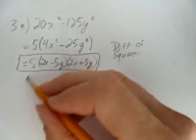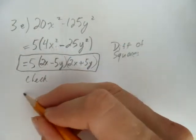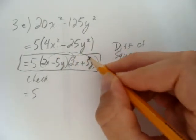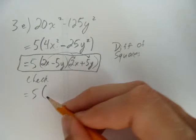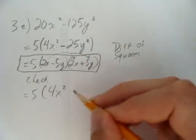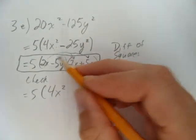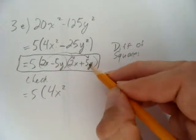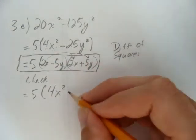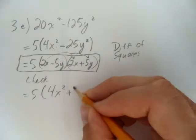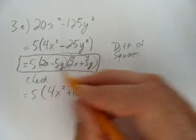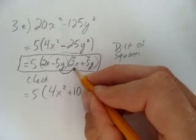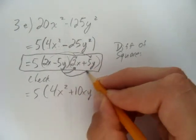If you don't believe me, you can check. How do you check? Expand it — rainbow it back. We'll start with 2x times 2x — you get 4x squared. That's the first thing we do with this rainbow or FOIL: 2x times 2x gives 4x squared. Then 2x times positive 5y gives 10xy.